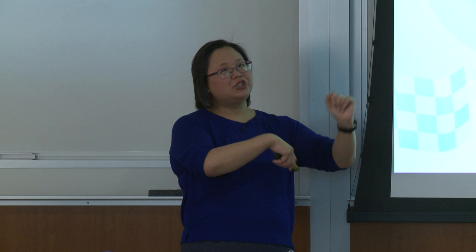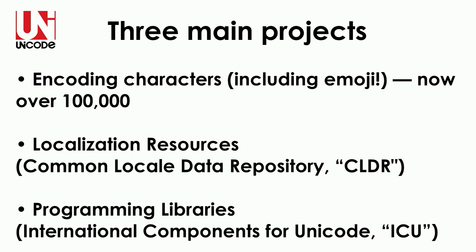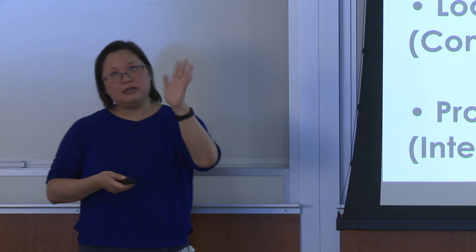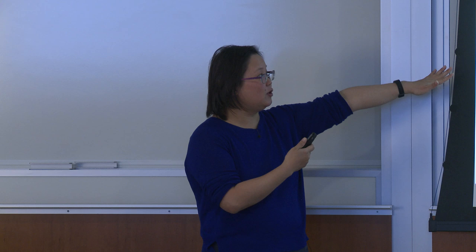They started with encoding Russian and Arabic, the second generation was Chinese, Japanese, and Korean — a little harder — then worked their way down through hieroglyphics, and now they're basically at a lot of minority and even dead languages. They have three main projects: they encode characters including emoji — now over a hundred thousand characters encoded. From a computer science perspective, they also have localization resources known as the Common Locale Data Repository, or CLDR, which tells you things like date format conventions: month-day-year, day-month-year, 24-hour clock, and so on.